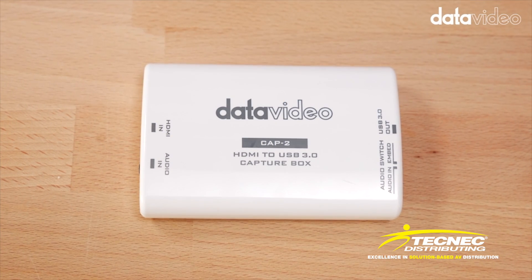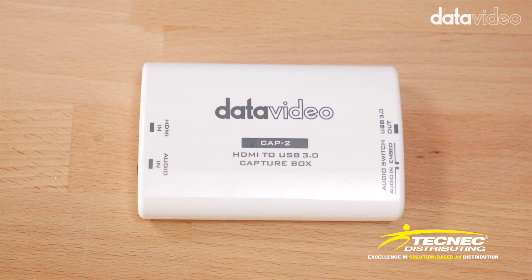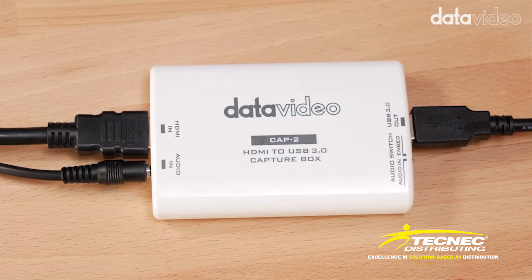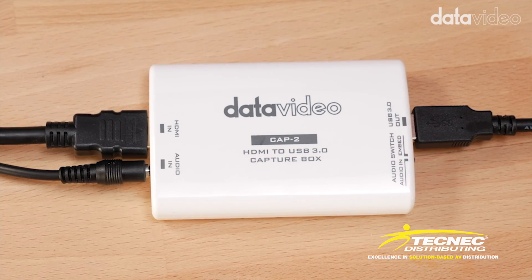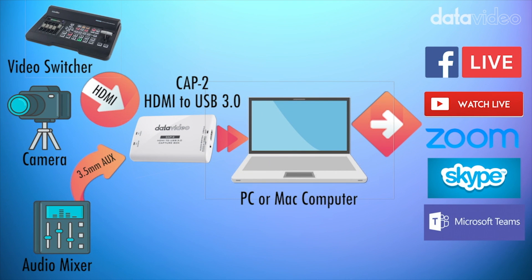This is the Data Video Cap 2. It's an HDMI to USB 3.0 capture box which converts the HDMI output with embedded audio of a video switcher, camera, or media player into a format your Mac or PC can use to live stream.